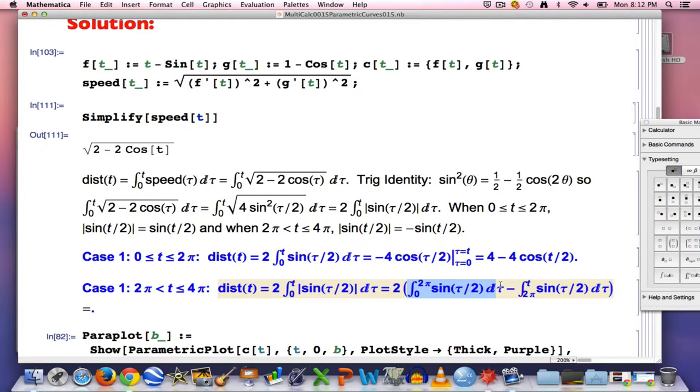First case, this integral times 2 is going to give you exactly this with t equals 2π plugged in. When you plug in t equals 2π here, 2π/2 is π, cos(π) is negative 1, you ultimately get 4 minus 4 times negative 1. 4 plus 4 is 8. For the next one, doing this integral here, I'm going to put the 2 along in there as well. I'm going to get a plus 4cos(τ/2). And for that part, again, τ will go from 2π up to t.